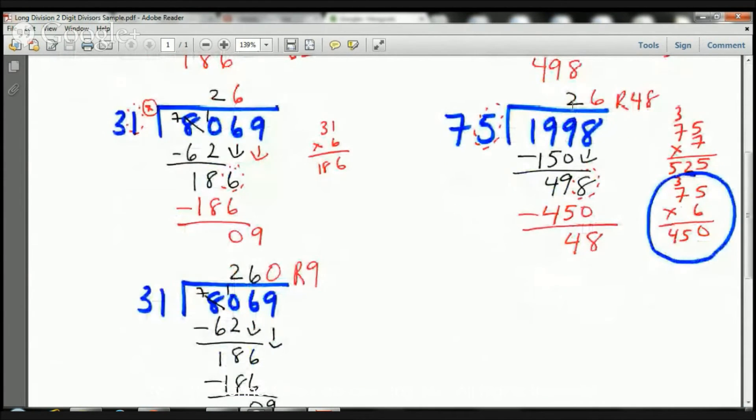So I have 498. Now I have 498. And let's take a look again. I'm going to cover up this 5. I'm going to cover up this 8 in the ones place. And I need to ask myself, how many times does 7 go into 49? Well, I know that 7 times 7 equals 49. So again, let's practice good habits. Let's move to the side. Let's multiply 75 times 7 and see what happens.